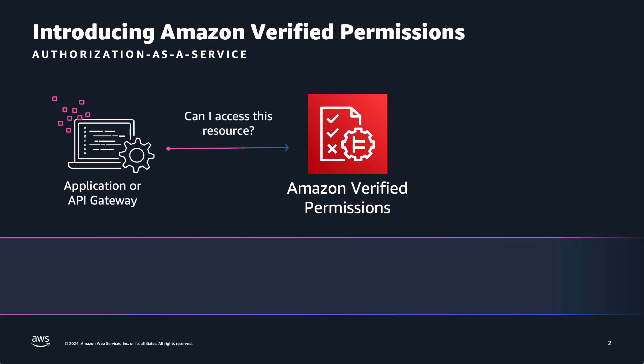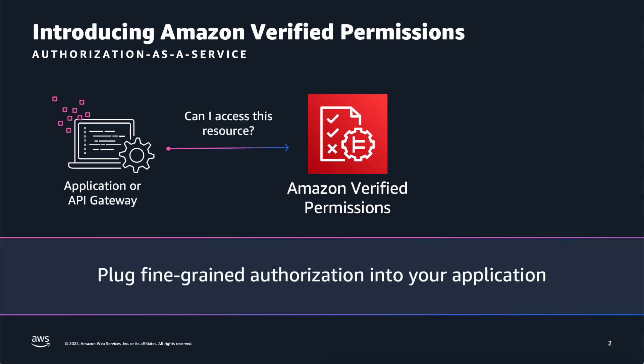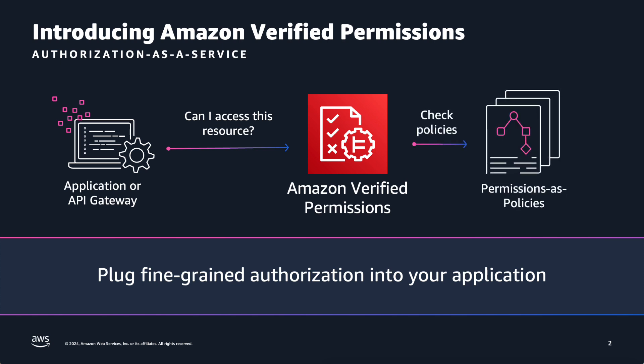Amazon Verified Permissions service enables you to implement permissions management and authorization within the applications that you build. It's authorization as a service. Instead of building your own application-specific authorization system, you can add granular permissions into your application. Your application or a logical enforcement point like Amazon API Gateway can call Amazon Verified Permissions to determine if a user can access a resource. Verified Permissions can check a user's access rights based on the policies in its policy store. For example, in a banking application, the application would call Amazon Verified Permissions every time a user withdraws money to ensure that the user is authorized to take that action.